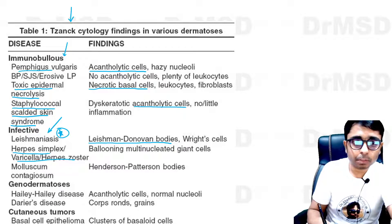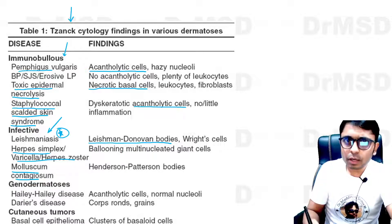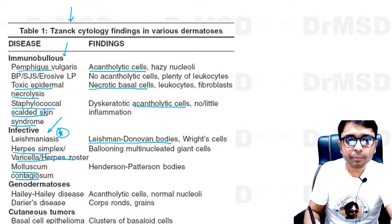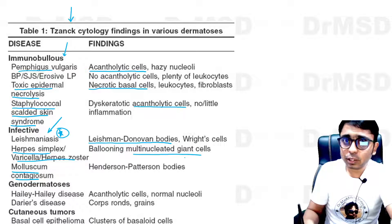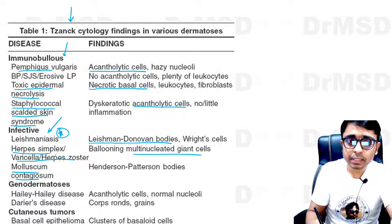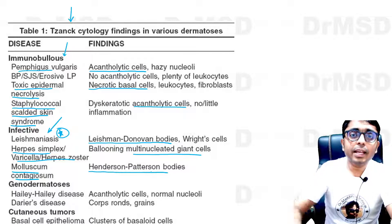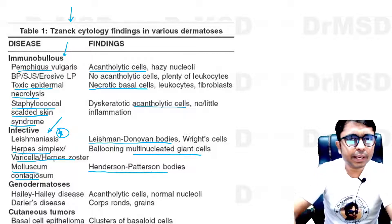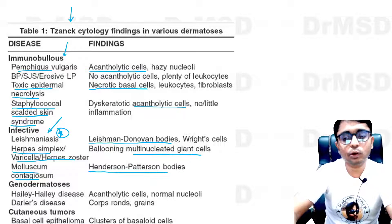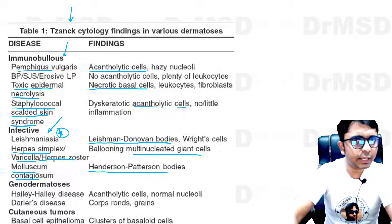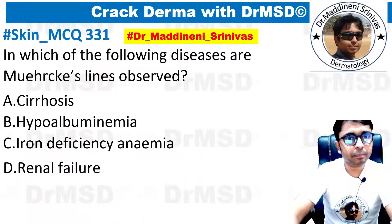In viral infections — herpes simplex, varicella zoster virus (chickenpox), herpes zoster, and molluscum contagiosum virus — Tzanck smear can be used. In herpes infections we notice multinucleated giant cells and acantholytic cells, and in molluscum contagiosum we can notice intracytoplasmic eosinophilic inclusion bodies, that is Henderson-Paterson bodies.